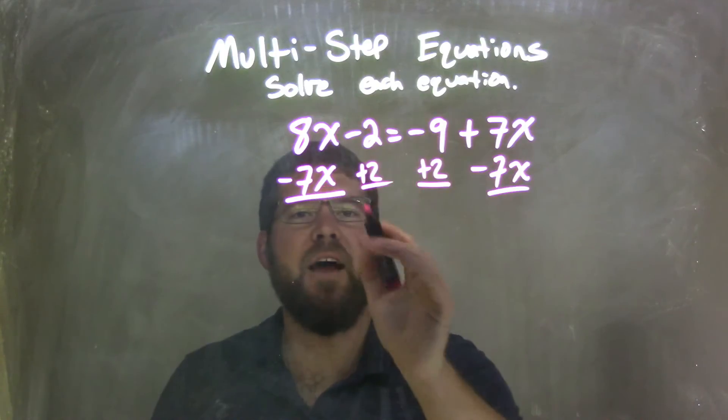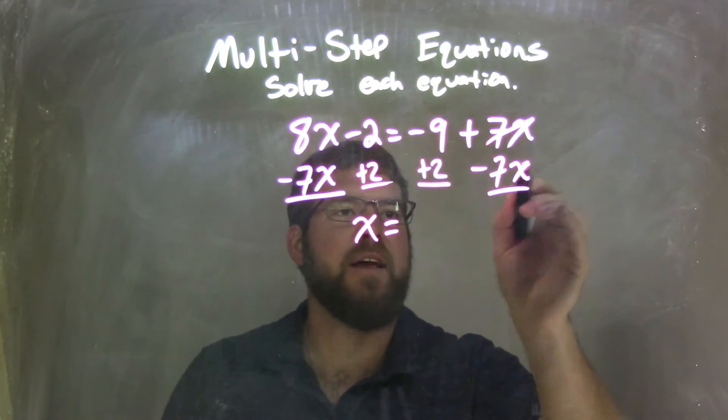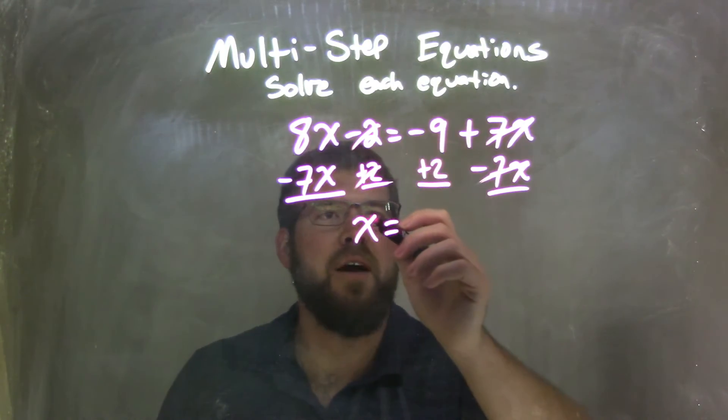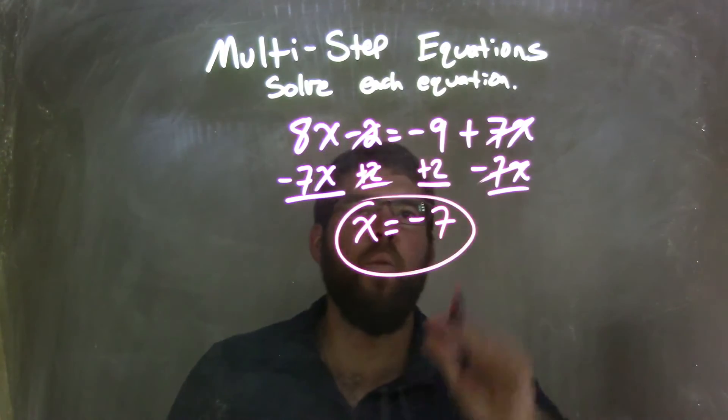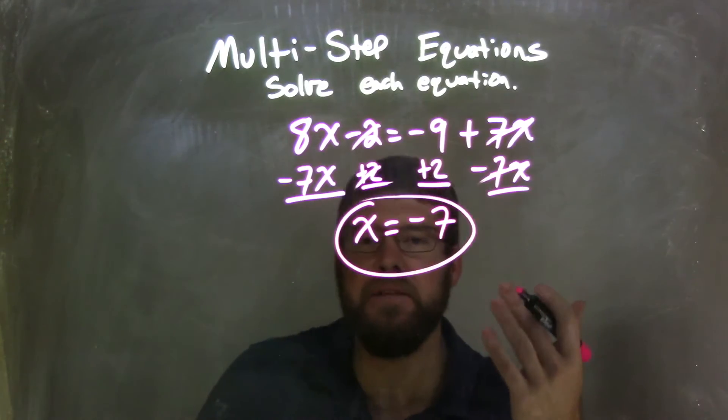So, 8x minus 7x is just 1x. These 7x's cancel out. Negative 2 plus 2 is 0, it cancels out here, and then negative 9 plus 2 is negative 7. And actually, in one big step here, I got my final answer of x equals negative 7.